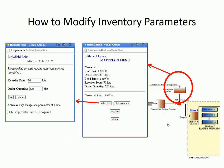During the simulation, if you want to change your inventory policy, click on the material buffer icon, which will bring up a dialog with an edit data button. Click on edit data and it will bring up another dialog where you can enter your reorder point and order quantity.